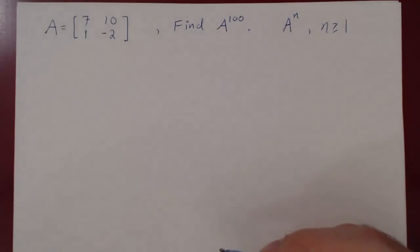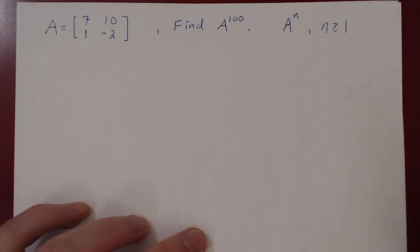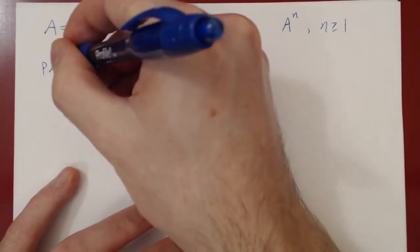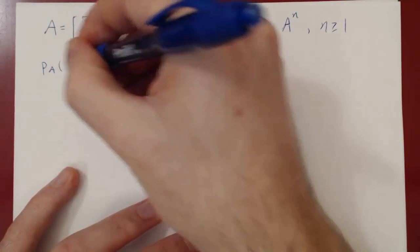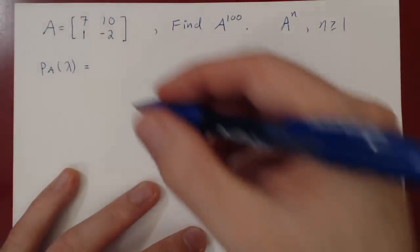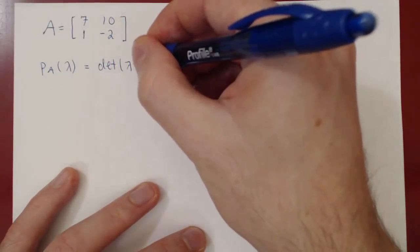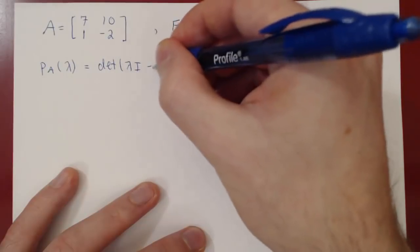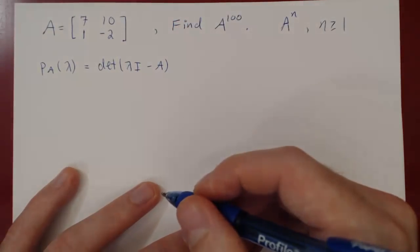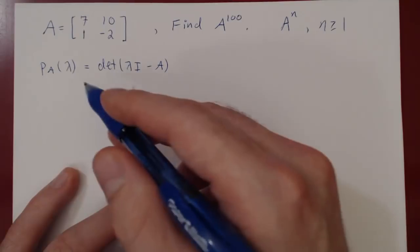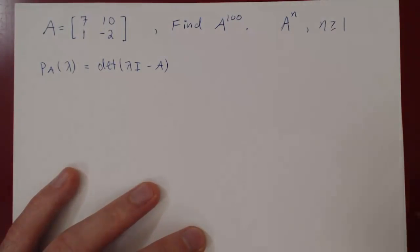Let's get started. What we need first is to find the eigenvalues of the matrix. These will be the roots of the characteristic polynomial, which is the determinant of the matrix λI minus A. Because A is a 2 by 2 matrix, we will have a polynomial of degree 2, so it will just be a quadratic.